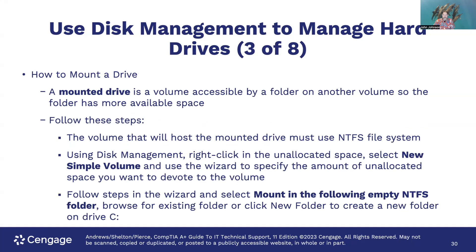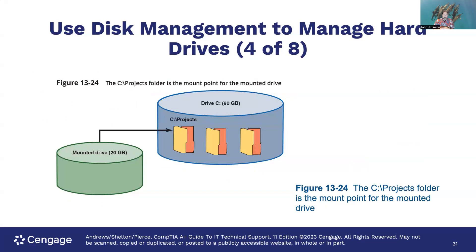For mounting a drive: a mounted drive is a volume accessible through a folder on another volume, giving that folder more available space. To set it up, the host volume must use the NTFS file system. In Disk Management, right-click the unallocated space, select New Simple Volume, use the wizard to specify the amount of space, and then select 'Mount in the following NTFS folder.' Browse for an existing folder or create a new one on the C drive. The C project folder acts as the mount point for the mounted drive.